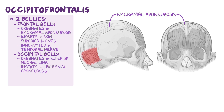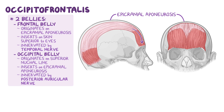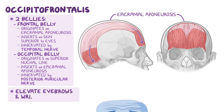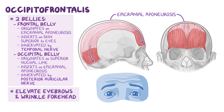The occipital belly originates on the superior nuchal line of the occipital bone and inserts on the epicranial aponeurosis. The occipital belly is innervated by the posterior auricular nerve. When the frontal belly contracts, it protracts the scalp, and when the occipital belly contracts, it draws the scalp back. When they work together, they elevate the eyebrows and wrinkle the forehead, making you look surprised.